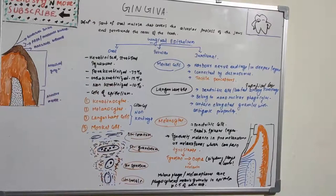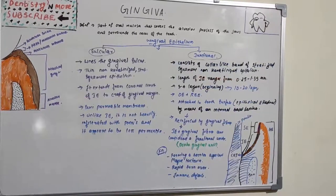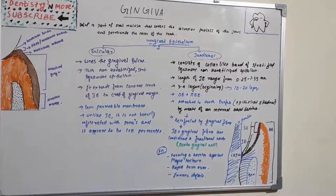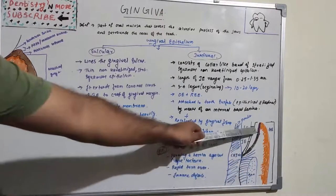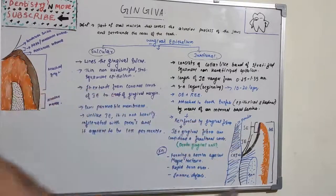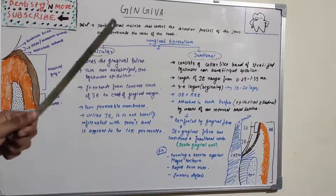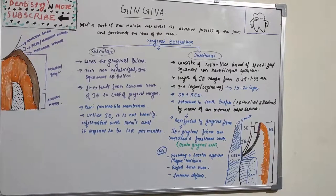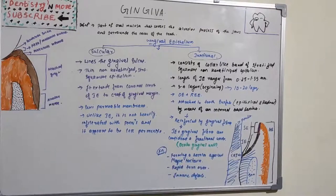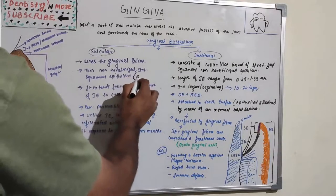Now we will see sulcular and junctional epithelium. Sulcular epithelium is the blue section visible in the diagram. It lines the gingival sulcus and is a thin non-keratinized stratified squamous epithelium without any rete ridges.